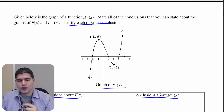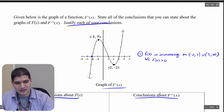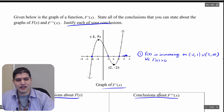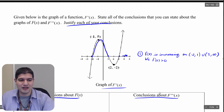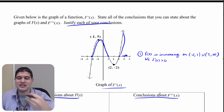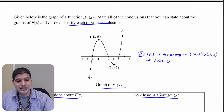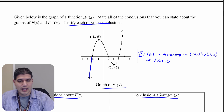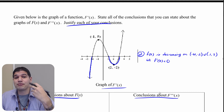The first conclusion about f is that f is going to be increasing between negative 2 and 1, as well as from 3 to infinity. The reason we know it's increasing is because f prime is positive — all of that is above the x-axis. Along with that, f is going to be decreasing between negative infinity and negative 2, and from 1 to 3, because f prime is negative there.